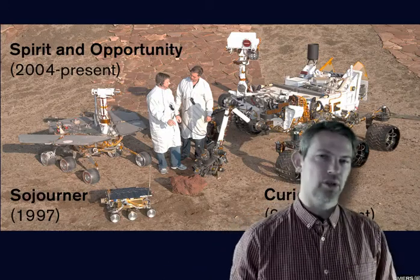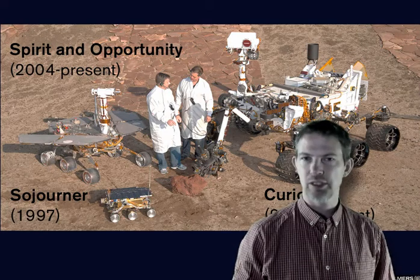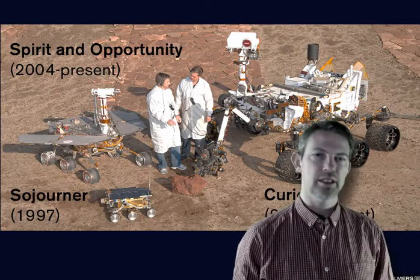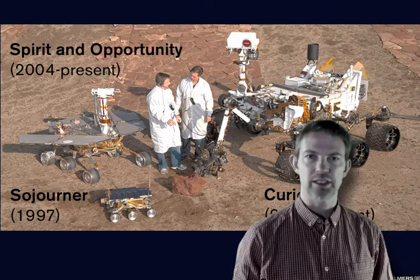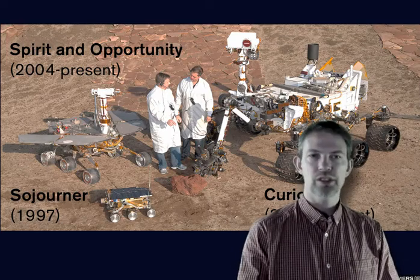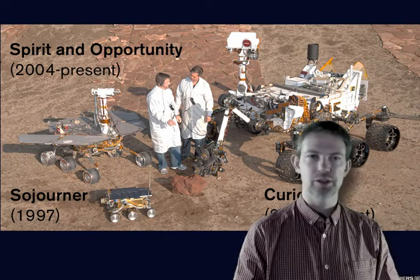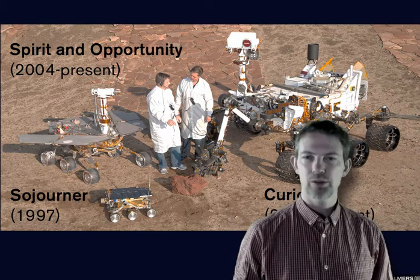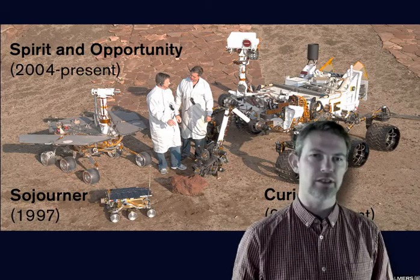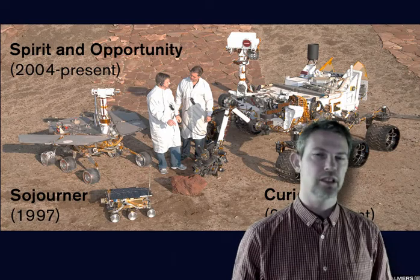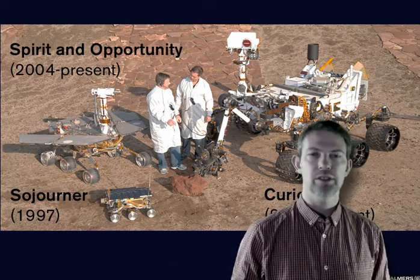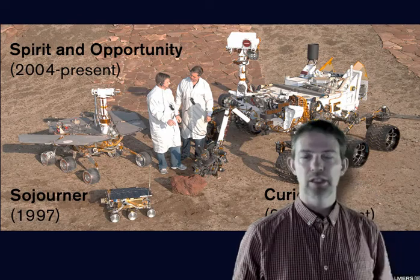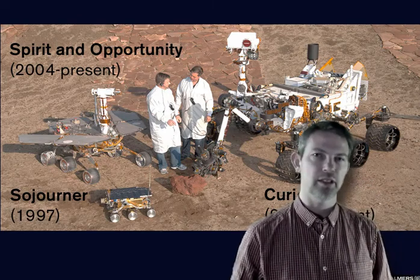Back to the Mars rovers. There have been three rovers surveying the surface of Mars. As you can see, they are quite different in size. The small Sojourner was only active for three months during 1997 — it was a kind of proof of concept. Then in 2004, two Mars rovers landed: Spirit and Opportunity. Opportunity is still active in 2016. And then four years ago, Curiosity, a much bigger rover, also landed and is still active on Mars.